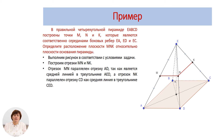Отрезок MN параллелен отрезку AD внизу, так как является средней линией в треугольнике AED. А отрезок NK параллелен отрезку CD как средняя линия в треугольнике CED.